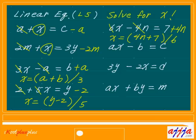What about this one? Minus b — now plus b. So b plus c in parentheses, then divide by — scratch this one — A. That's it. That's what x is: x equals b plus c over A.